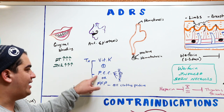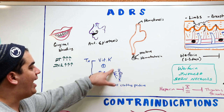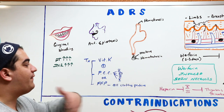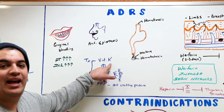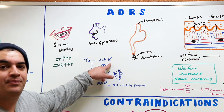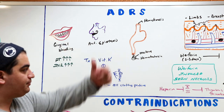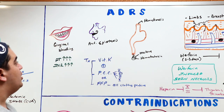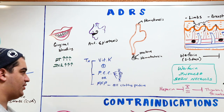Giving Vitamin K oversaturates the Vitamin K epoxide reductase, so warfarin can't inhibit production of pro-coagulants anymore, allowing them to rise. Giving PCC directly provides the pro-coagulants. Fresh frozen plasma provides all clotting proteins. So give Vitamin K plus PCC or fresh frozen plasma to someone bleeding from excessive warfarin.